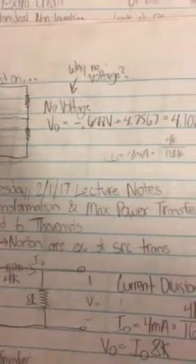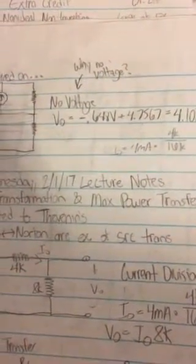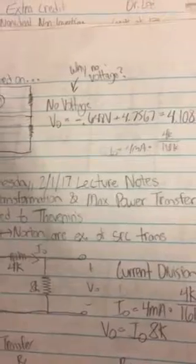And so, you'll just add up those two numbers. And then you'll calculate IO, which is 4 milliamps times 4K over 16K. Excuse me.